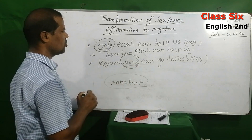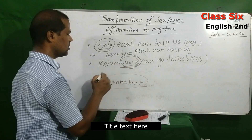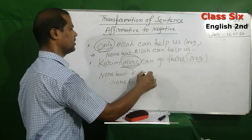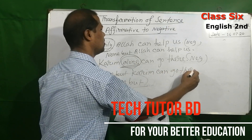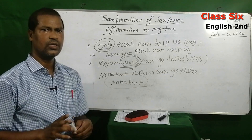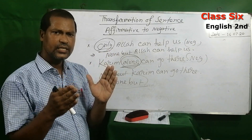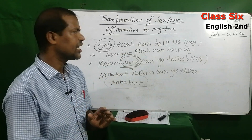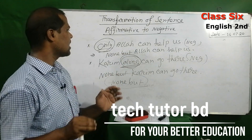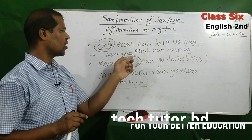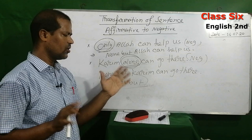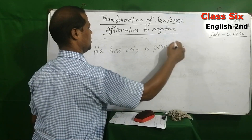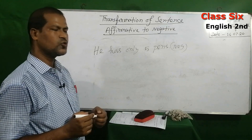Applying the same rule for 'alone': replace 'alone' with 'none but.' So 'Korim alone can go there' becomes 'None but Korim can go there.' Remember: for 'only' or 'alone,' use 'none but' in the negative form.